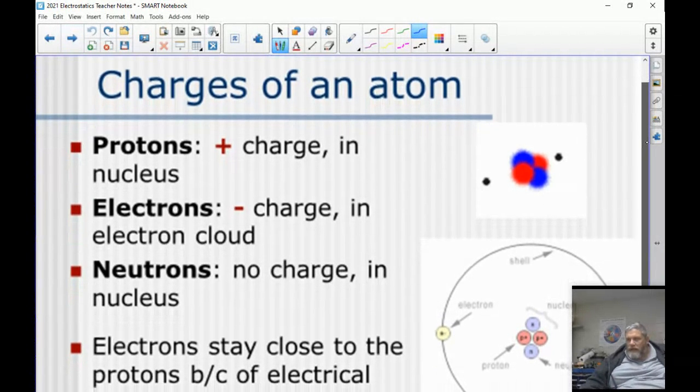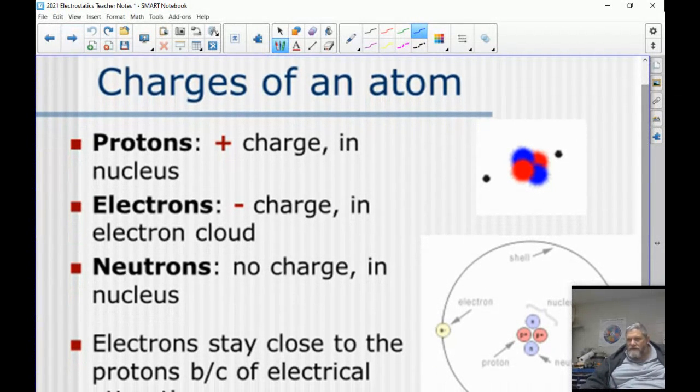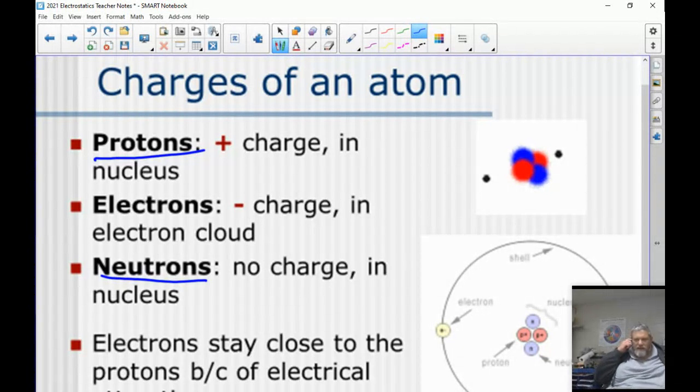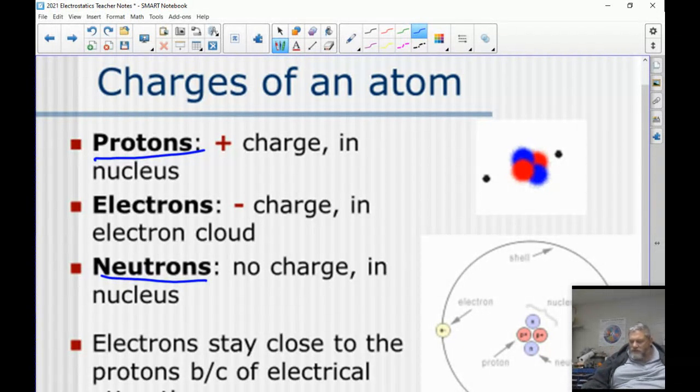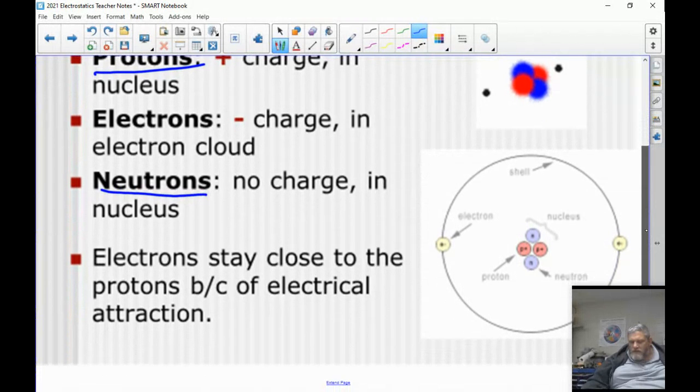So in an atom we know that the protons are positive and they're in the nucleus along with the neutrons, but the neutrons don't have any charge. They're just there for other reasons. Electrons are negative and they surround the nucleus in what we call the electron cloud, and they stay there because of the attraction between them, between the proton and the electron.